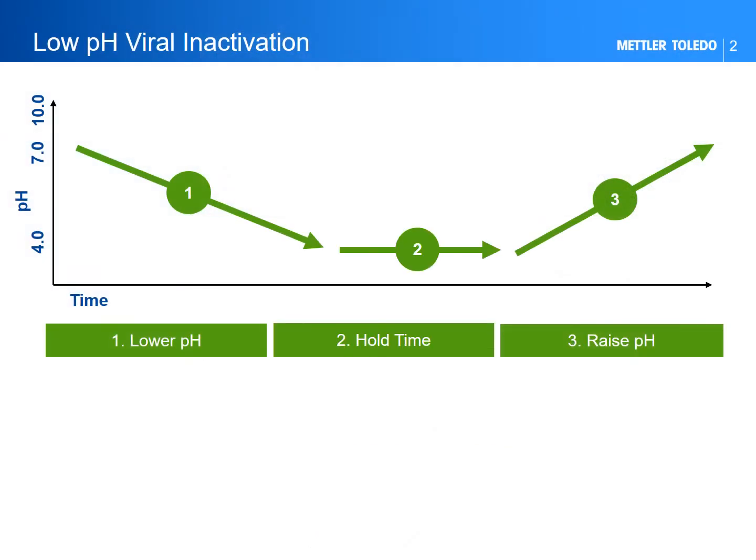Let us first start with a simplification of the viral inactivation operations. Viral inactivation consists of three main parts. One: lower the pH to a desired set point where, ideally, any viral particles are susceptible to irreversible acidic denaturation, but one where the damage to the drug substance conditions may be kept at a minimum.